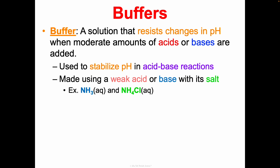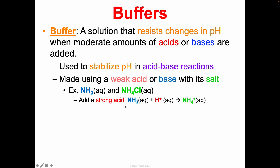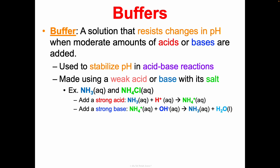You make a buffer using a weak acid and its corresponding salt, or a weak base and its corresponding salt. For example, ammonia is a weak base, and ammonium chloride is its corresponding salt. If you add a strong acid, it completely dissociates and adds a ton of hydrogen ions to the solution. The ammonia would react with those hydrogen ions, taking them up and making more of the ammonium ion.